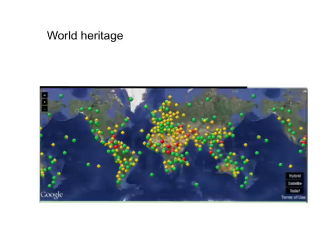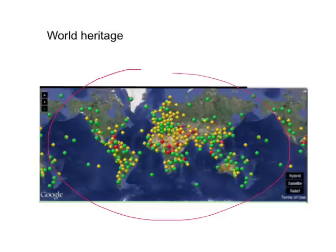Just below here is a map of all the World Heritage Sites. You can see there's a range of different colours — the yellow, the green, there's diamonds, and there's also a few red ones. We'll go through what all of those mean a bit later through the presentation.